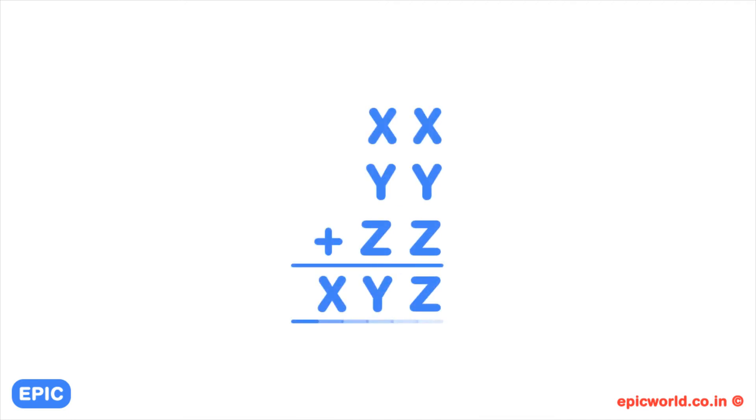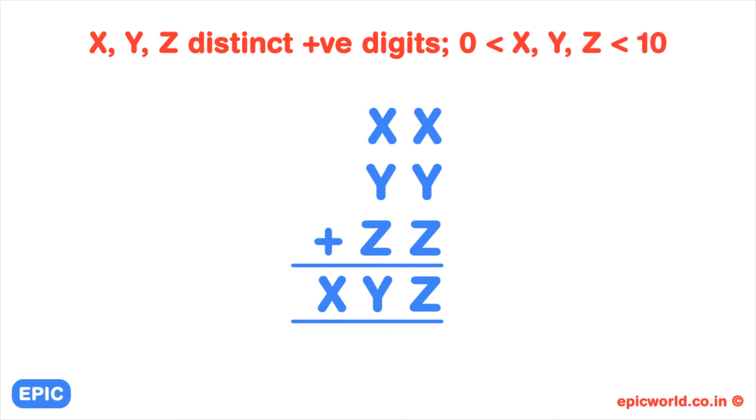In the given equation, XX plus YY plus ZZ equals XYZ. Can you find the value of each letter? Each letter represents a distinct number between 1 and 9.